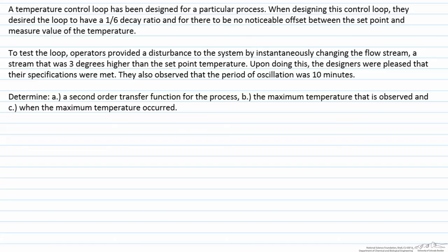In the problem statement that's provided, we have that a temperature control loop has been designed for a particular process, and the goal here is to develop a control loop which provides a one-sixth decay ratio and something that will provide no offset.